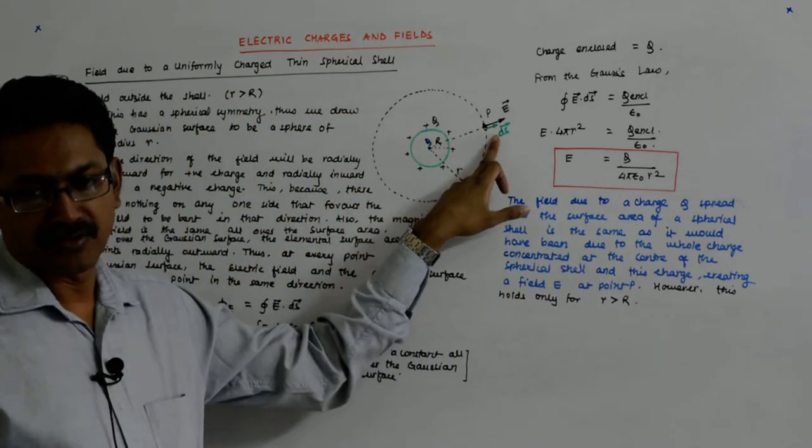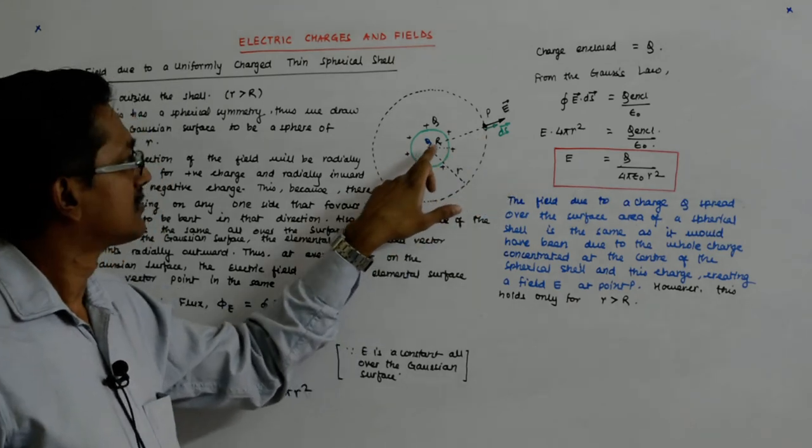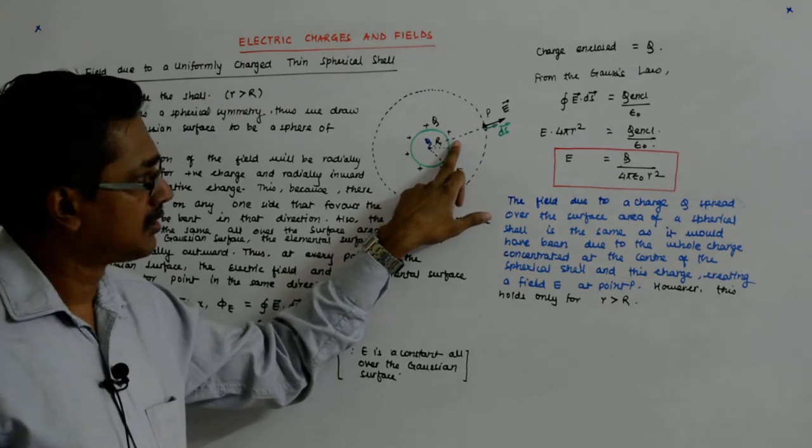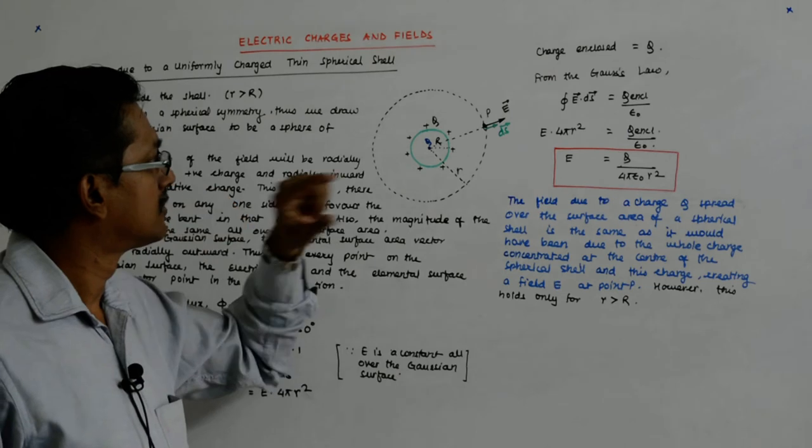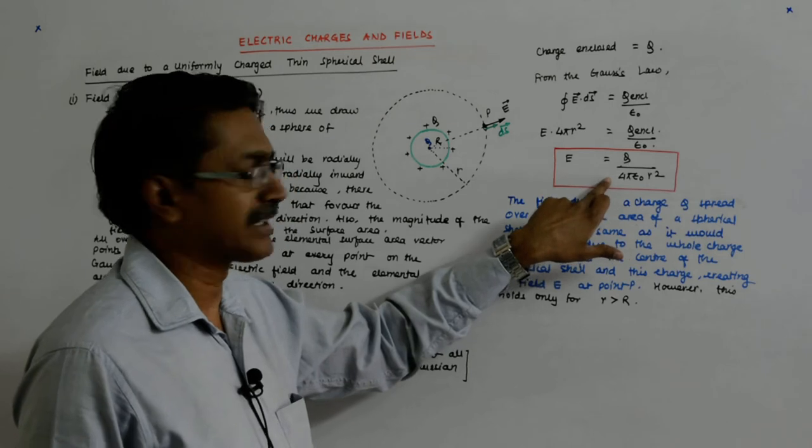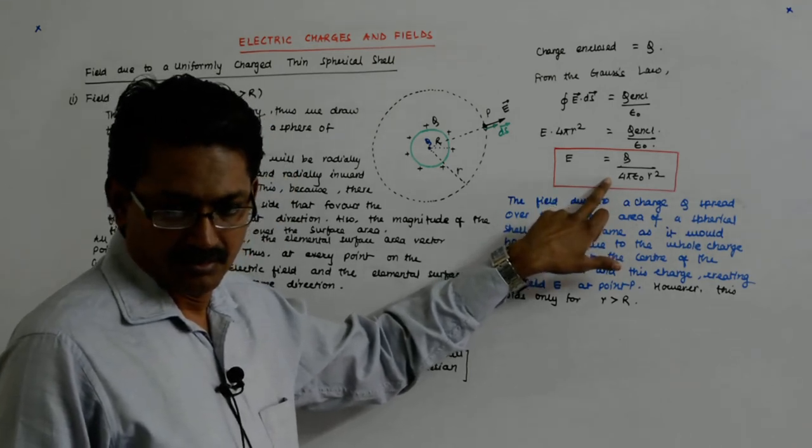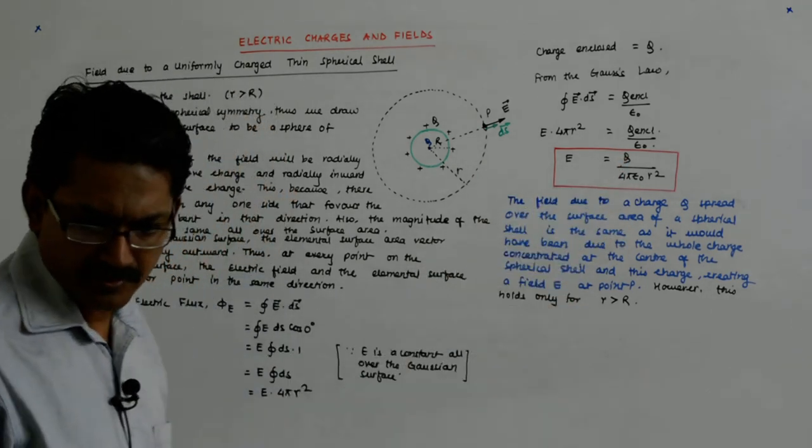The field we are finding here. The charge is not here, the charge is here. So why not write sigma upon capital R squared, one by epsilon naught? And you say that Q by 4π capital R squared should be written as sigma.